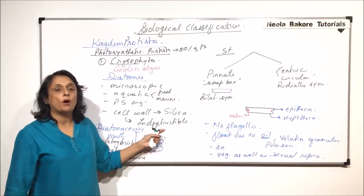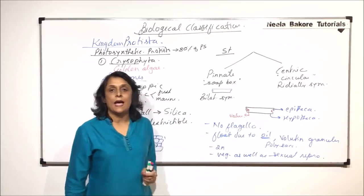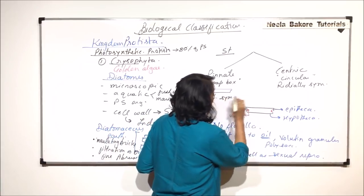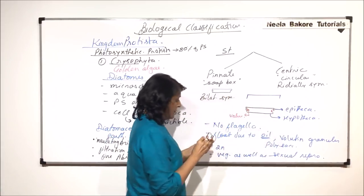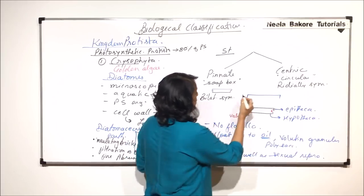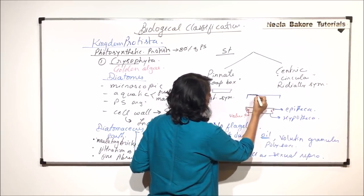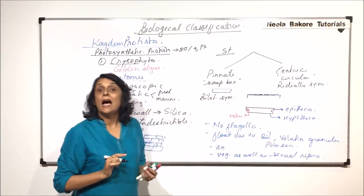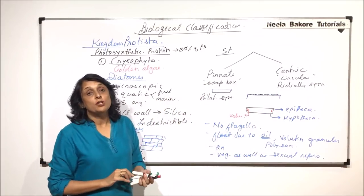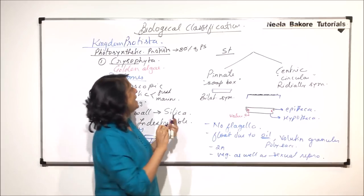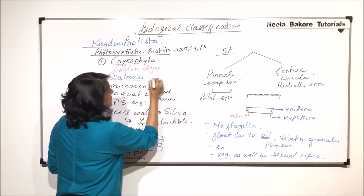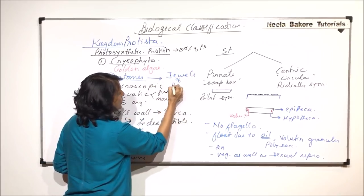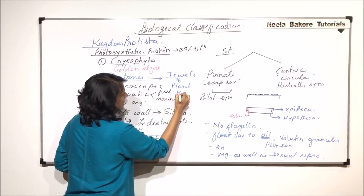Because of silica deposition, we are drawing this epitheca and hypotheca as straight lines, but when silica gets deposited, the upper surface is not smooth. Because of this deposition here and there, there are ridges and different patterns on the outer surface which look very attractive.